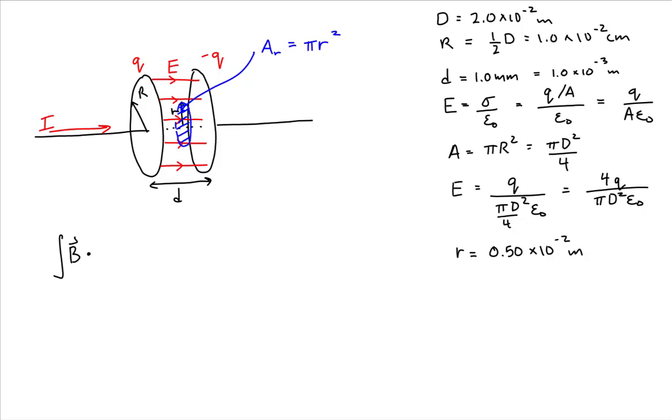We have the line integral of the magnetic field along a loop that binds or bounds an area is equal to mu naught times the current through the loop, through that area, plus epsilon naught times the change of electric flux through the given area.